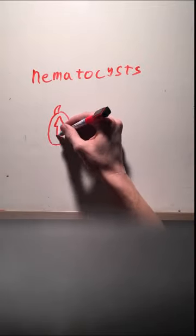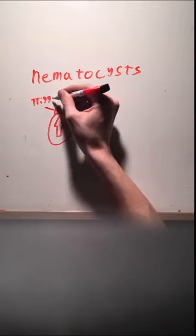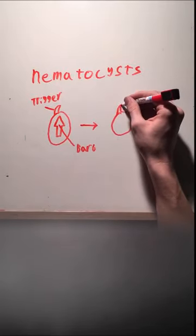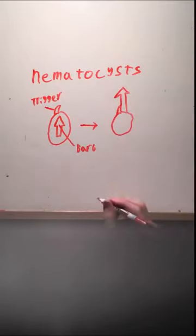Called nematocysts, with touch-sensitive triggers. These nematocysts can fire faster than the blink of an eye. And this is how venom is administered to predators or prey.